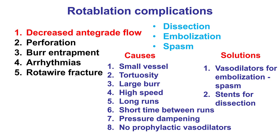Starting with the first one, decreased antegrade flow — the two main mechanisms are dissection or embolization, although spasm can play a role as well. The most common causes are atherectomy of small and tortuous vessels using large burrs and high speed with both rotational and orbital atherectomy. Risk factors for slow flow and distal embolization include performing long runs, because there is more debris liberated, and having a short interval between runs. Ideally, one should spend enough time waiting between runs to allow debris to go through the microcirculation.